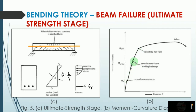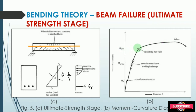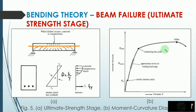When the actual moment exceeds the cracking moment, this is the approximate service or working load range — the second stage. After the steel yields (third stage), the beam has very little additional moment capacity. Only a small additional load is required to substantially increase rotation and deflection. The slope of the diagram is almost flat until the failure point, where the beam experiences failure.